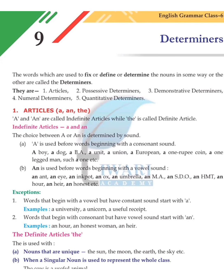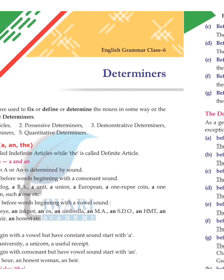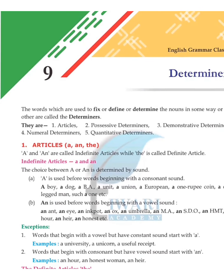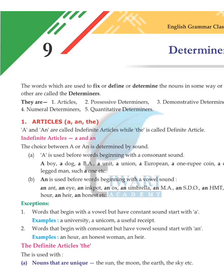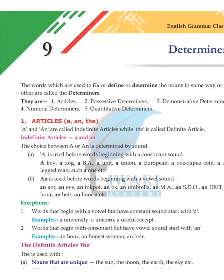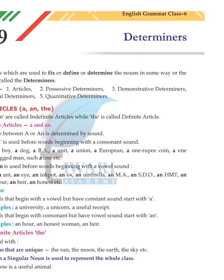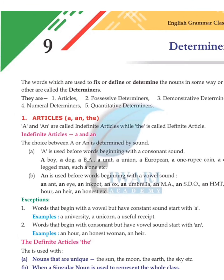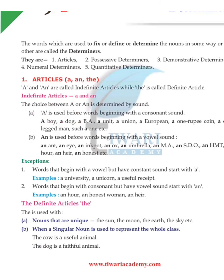Warm welcome students. This is chapter 9 and revision is going on, you already know that. Chapter 9 is determiners. The words which are used to fix, define, or determine the nouns in some way or the other are called determiners. Determiners include articles, possessive determiners, demonstrative determiners, numeral determiners, and quantitative determiners.